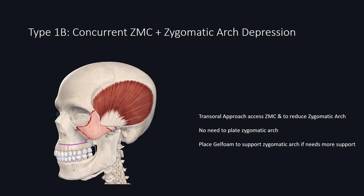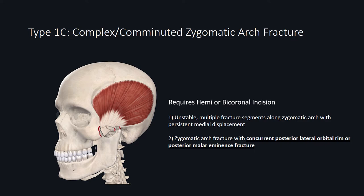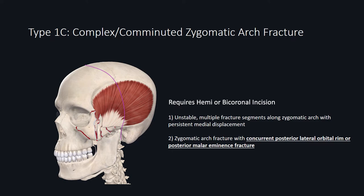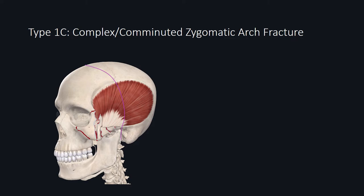The displaced ZMC fracture should also be repaired using the treatment algorithm mentioned later. In Type 1c, you have a complex or comminuted zygomatic arch fracture. If the zygomatic arch fracture is in multiple pieces with a tendency to be displaced medially despite reduction attempts, open the fracture site and plate it to minimize medial displacement and resulting coronoid compression and trismus. More commonly, you may have a zygomatic arch fracture combined with fractures of the posterior aspect of the lateral orbital rim or malar eminence that are not adequately accessible via the lateral brow or intraoral approach. In that situation, consider using a hemicoronal or bicoronal incision.